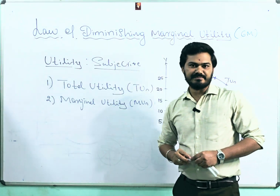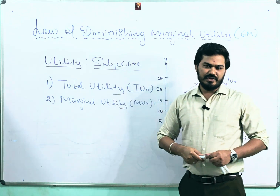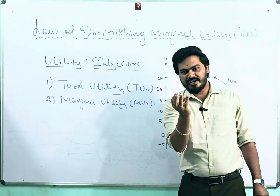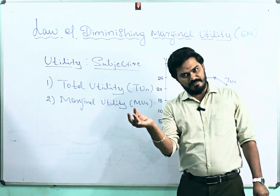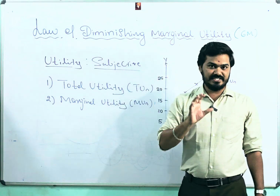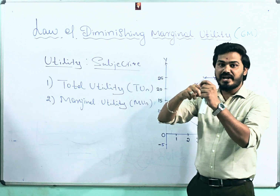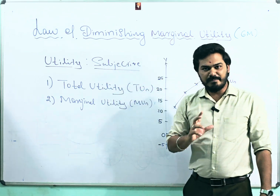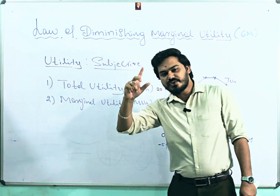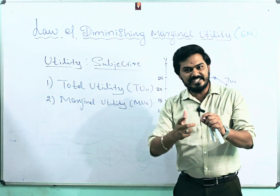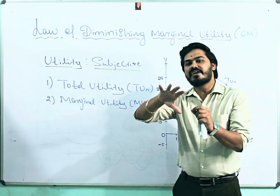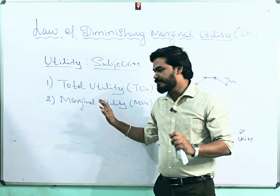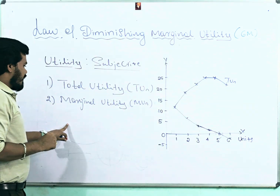Total utility is the total satisfaction derived from X commodity — X commodity means either chocolate, Golgappa, mango, or banana. The total satisfaction derived from consuming that commodity is called total utility. Marginal utility means the change in total utility due to consumption of an additional unit. Marginal means extra — because of that extra unit, our total utility changes.